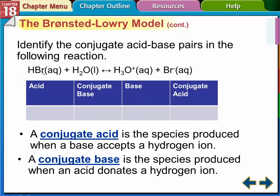In the HBr example, HBr has the H and loses it — so that's the acid, which means water is the base. Acid on the left becomes conjugate base on the right: HBr became Br-minus, so that's the conjugate base. Water became H3O-plus, so since water was the base, H3O-plus is the conjugate acid. Acids become conjugate bases; bases become conjugate acids when going from left to right.